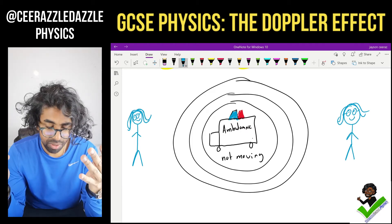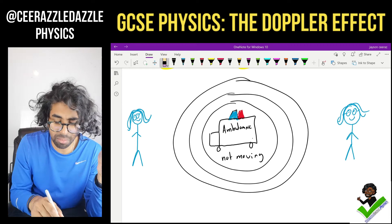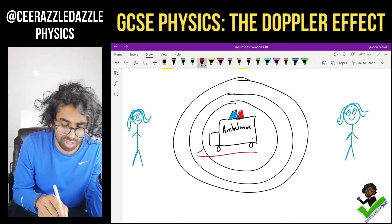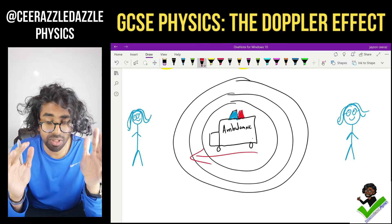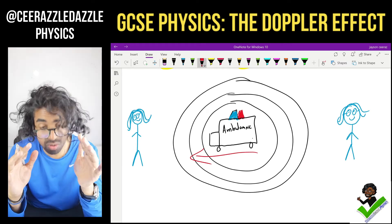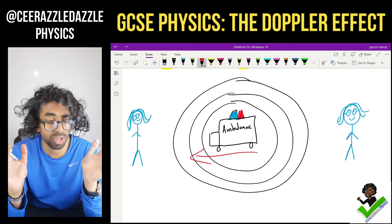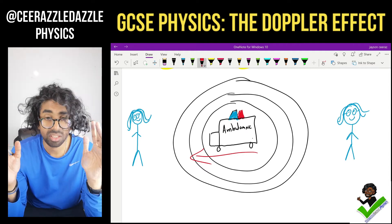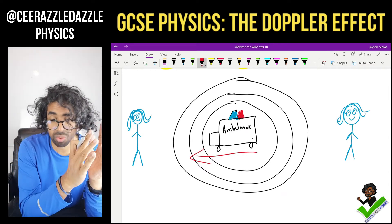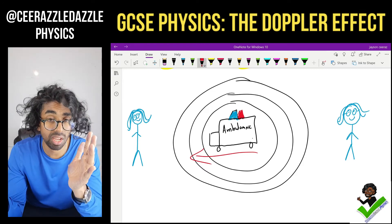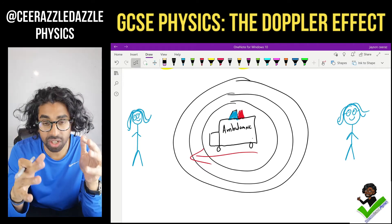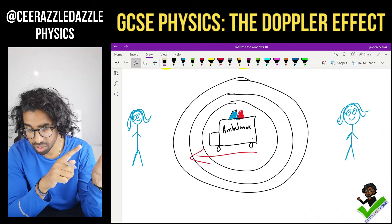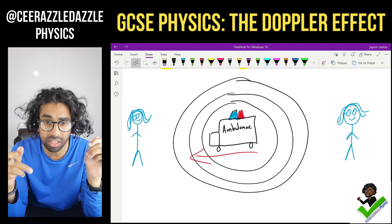The ambulance is now going to start to move in this direction. The thing to think about is what's going to happen to those waves? As it moves in this direction, we'll notice the following pattern: some of the waves will be compressed on one side and some of the waves will be stretched out on the other, changing the way the waves look.